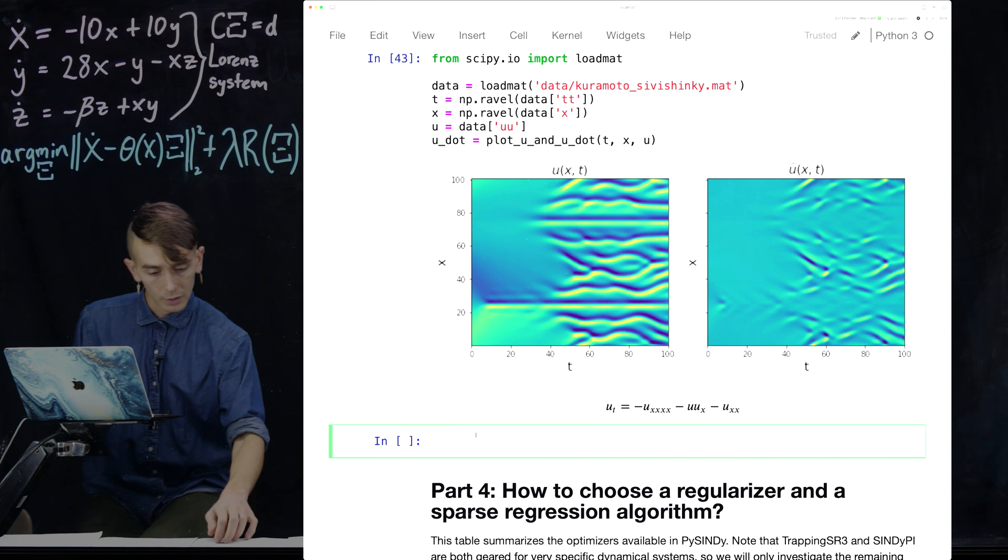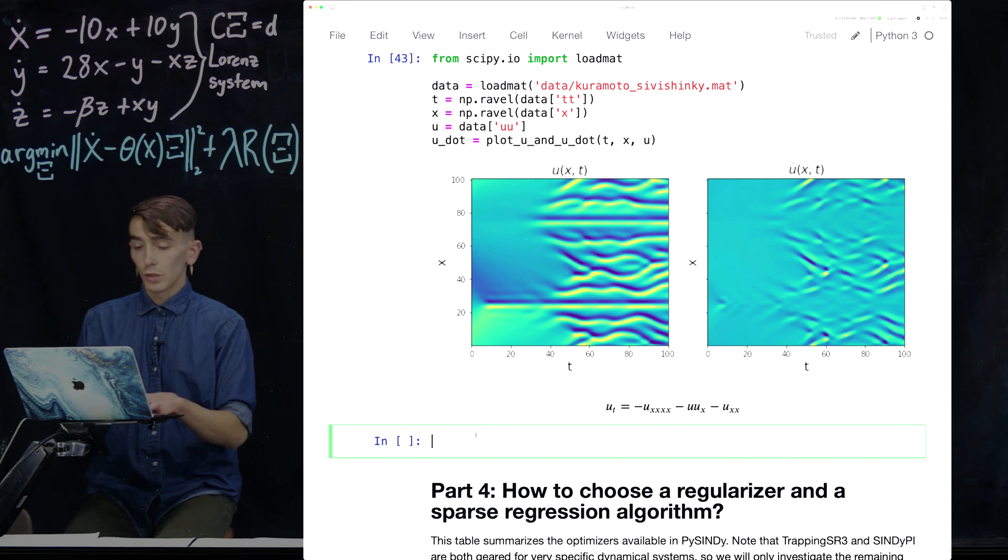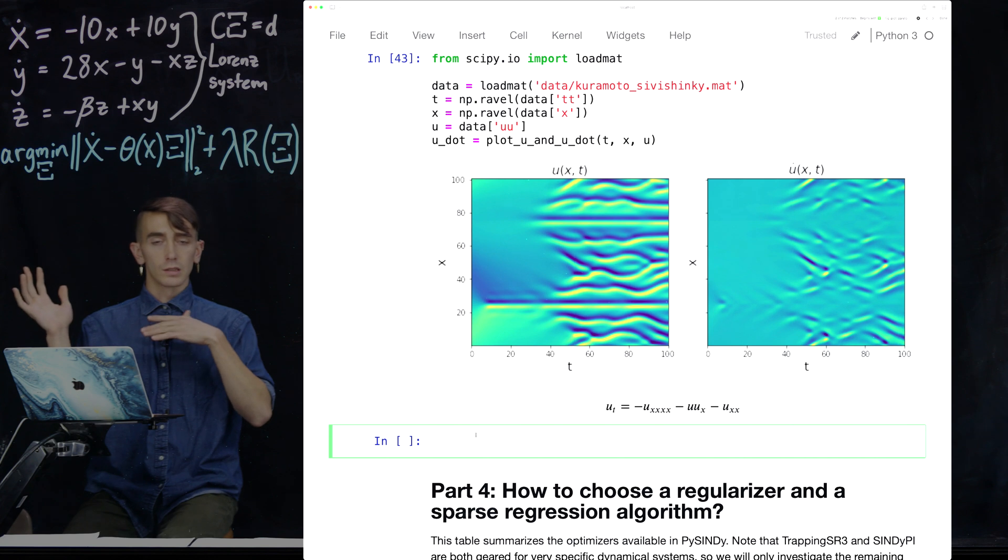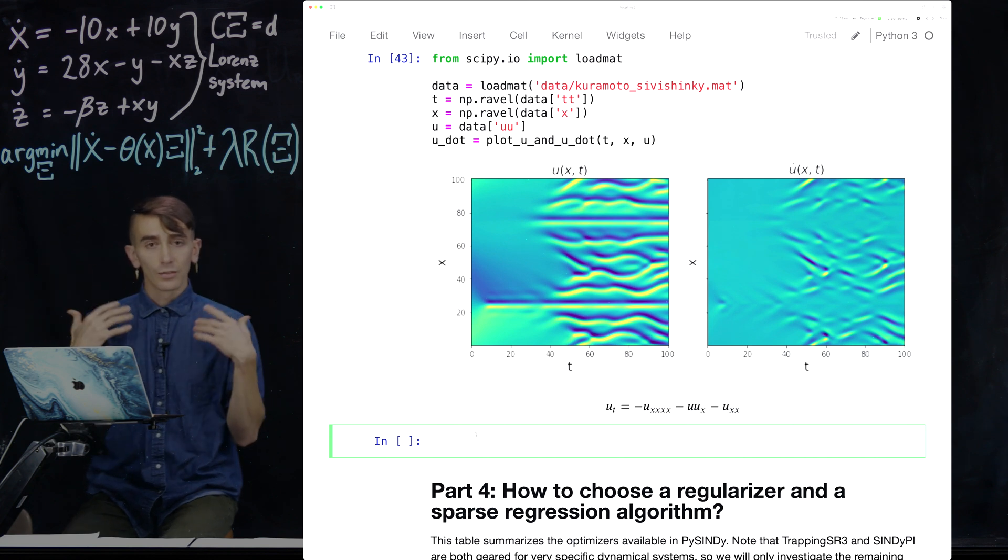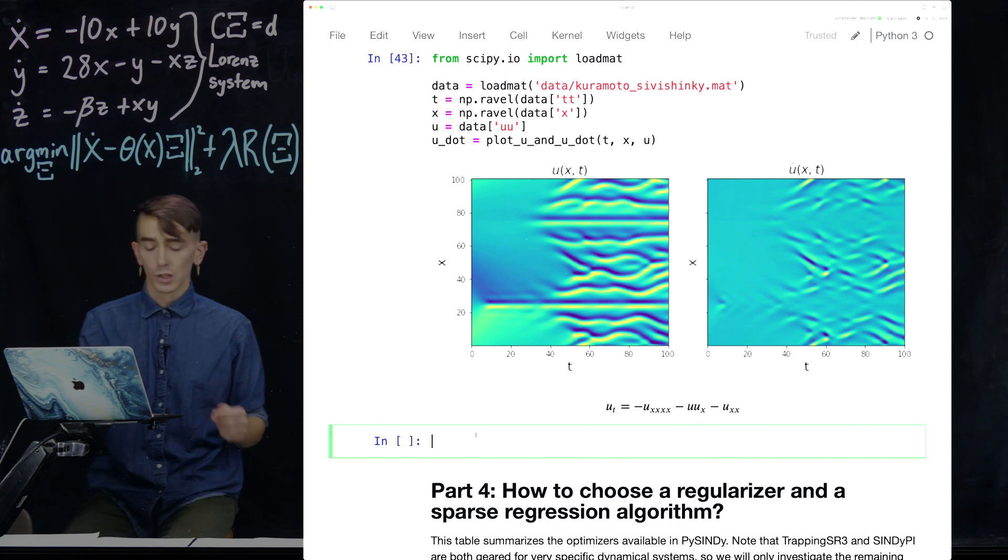So now we want to take this data and be able to fit a SINDY model to it. What we're going to do, so this is now data that's sort of two-dimensional, but it's got a space and a time dimension. And we need to flatten the data so that it actually looks like a matrix that we can put into this optimization problem. So that's the first thing we do.